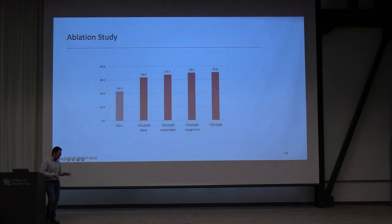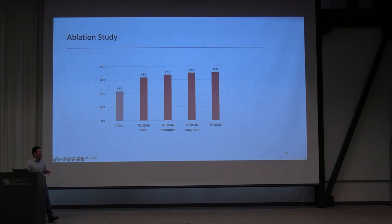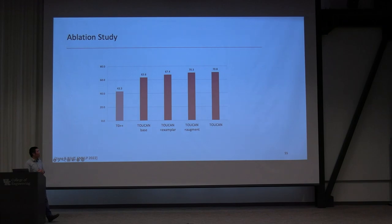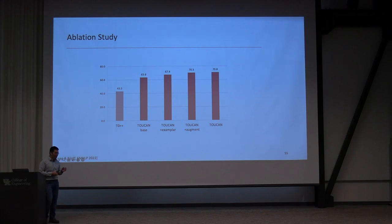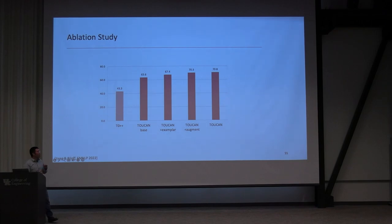We compare our model with multiple previous methods, showing only the best — T0++, a model trained on multiple tasks with very good performance, which we considered a strong baseline. Our base model without data augmentation and without frames already outperforms this model. Adding FrameNet exemplary sentences and augmentation further improves, and combining everything together achieves the best result.